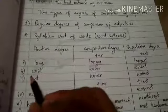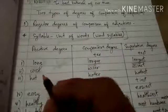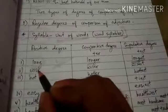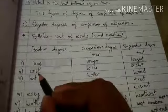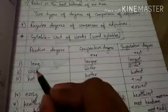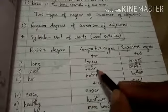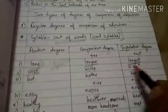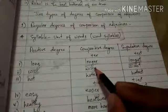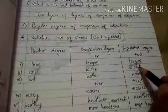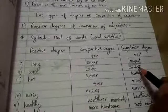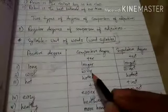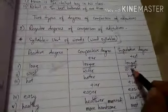Now see 'wise' — wise is also a single-syllabic word because we can pronounce it at once. But if you see, it ends with E. If any single-syllabic word or adjective ends with E, then we just add R only for comparative degree, because E is already there — no need to add E again. So: wise → wiser → wisest. In comparative degree just add R, and in superlative degree add ST.